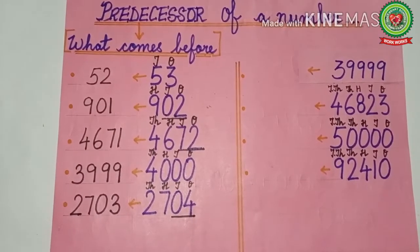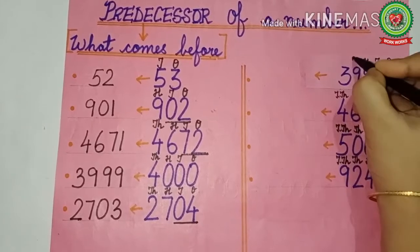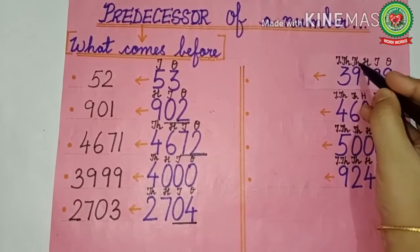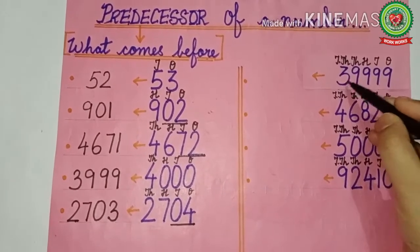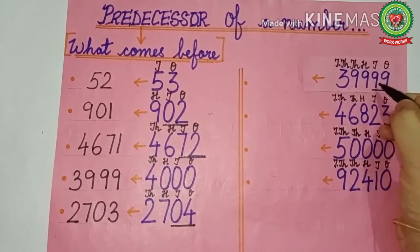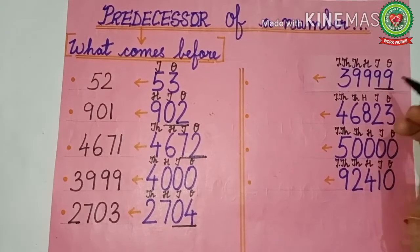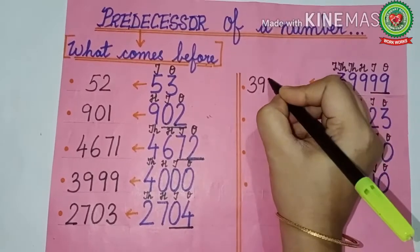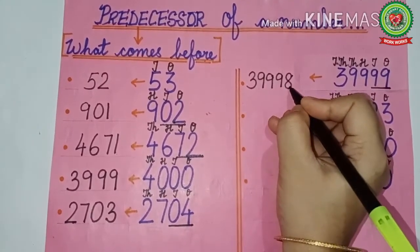Kids, we will now move on to 5-digit numbers. First of all, write the place value table: ones, tens, hundreds, thousands, and ten thousands. The number is 39999. We have to tell what is the predecessor of 39999. Here we will take the ones and tens place together — that is 99. What comes before 99? That is 98. So the other place values will remain the same — that is 39,900 — and 99 becomes 98. So 39,998 is the predecessor.